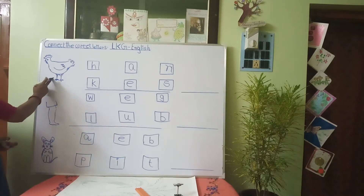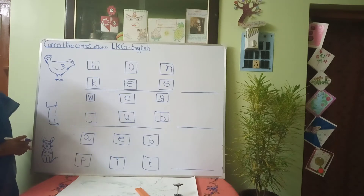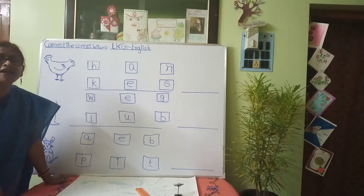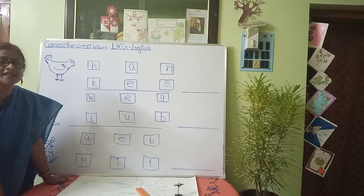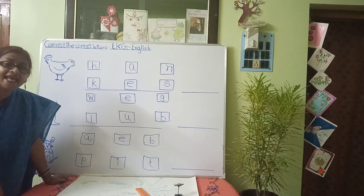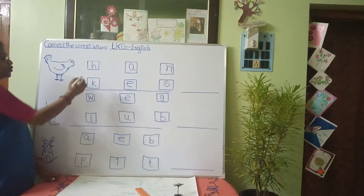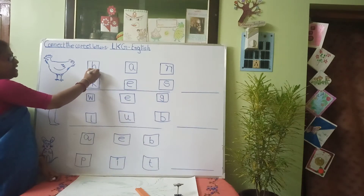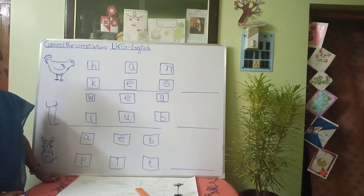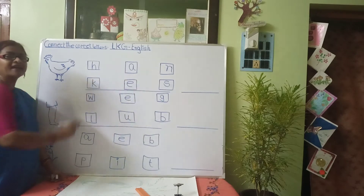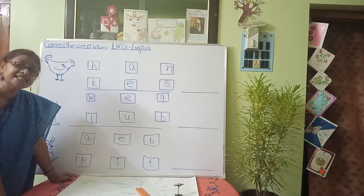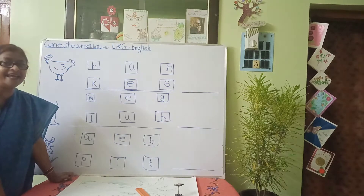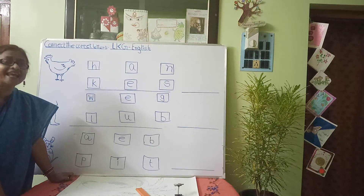Look at the board. Here is a picture of a hen. The starting letter of hen is H. So, we will start from H. The spelling of hen is H, E, N.